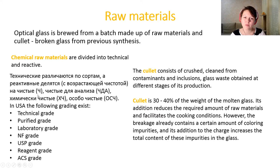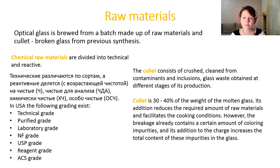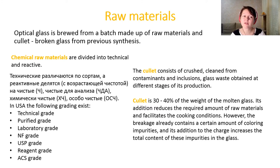Cullet is one part of the raw materials of the glass batch. It consists of crushed, clean glass waste obtained from previous or other stages of production. Cullet is usually 30 to 40 percent of the weight of the melt. Its addition reduces the required amount of chemical or mineral raw materials and facilitates glass synthesis conditions, but its main disadvantage is that it contains a large amount of impurities that we cannot control.